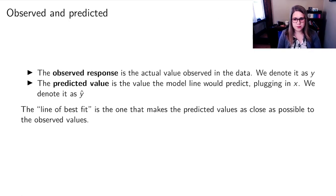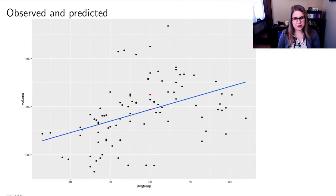So we have a couple more terms. We'll say that the observed response is the actual value in the data, and we'll just use regular y to write that. And then the predicted value is the value that the model would predict if you plugged in x. So that's the point right on the line. And we denote that as y hat. And then that line of best fit that we've talked about, that my technology found for me, is the one that makes the predicted values as close as possible to the observed values.